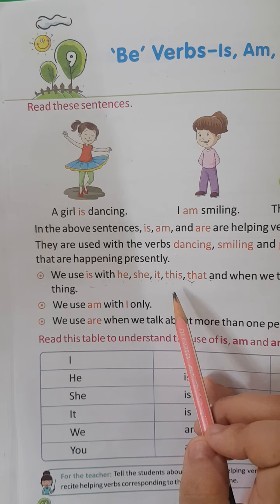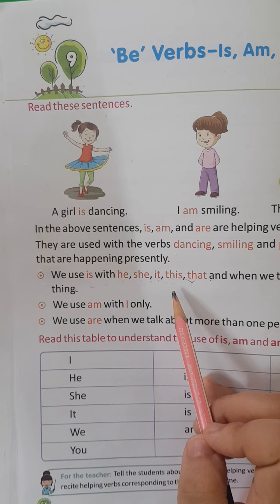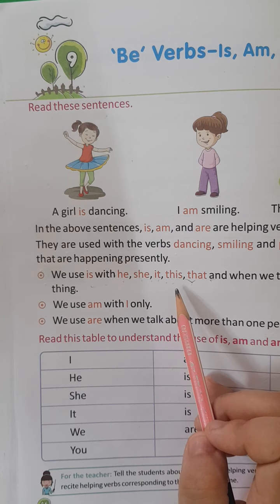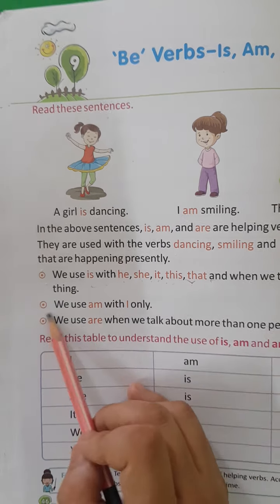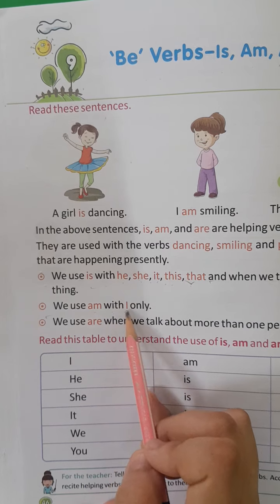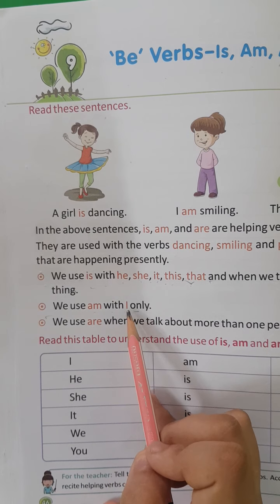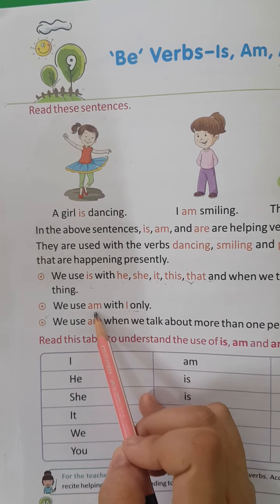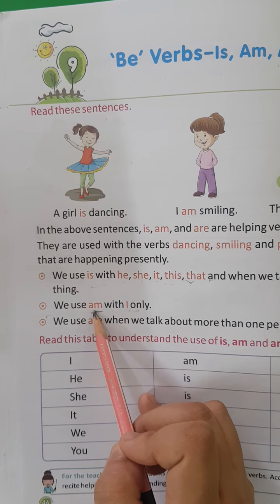Single naam ke liye — single boy, single place, single animal, single girl. We use am with I only.